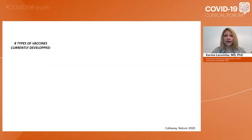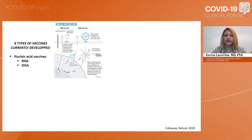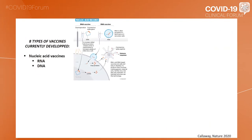First, to set up the scene, I would like to remind you of the eight types of vaccines currently developed in the setting of COVID-19. First of all, the nucleic acid vaccines, RNA and DNA. I wanted to highlight this paper from Colorway Nature 2020, where you can find a lot of information regarding the design of all vaccines.